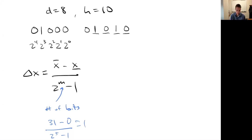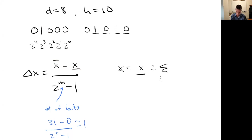This formula tells me the relationship between range, resolution, and number of bits — I can pick any one and solve for another. And if I want to take a binary number and get an x value out, the formula is: x equals x_min plus delta-x times the sum from i equals zero to m minus one of b_i times two-to-the-i, where b_i is the bit — either zero or one. Before we were doing the case where delta-x is one, but I could make delta-x anything. For example, if delta-x was 0.5, I'd multiply through by 0.5 — my range of numbers would go from zero to 15.5 but with finer resolution.